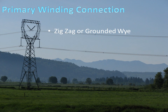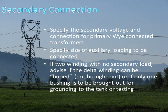Primary winding connection can be either a zigzag or a grounded Y. For the secondary connection, specify the secondary voltage and connection for transformers that are primary Y-connected — this can be either a delta or a Y connection. Specify the size of auxiliary loading to be connected if required. If you have a two-winding transformer with no secondary load, advise whether the delta winding needs to be brought out or if it can be buried. Oftentimes only one transformer bushing is brought out for grounding to the tank or for testing later on.